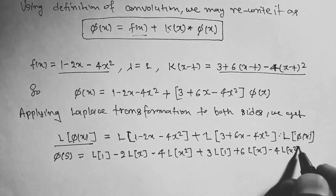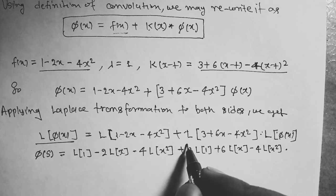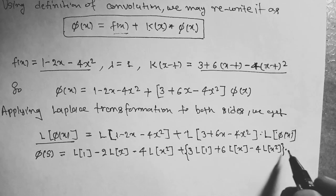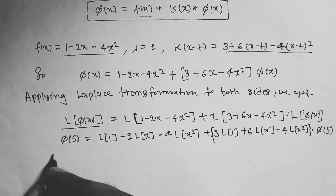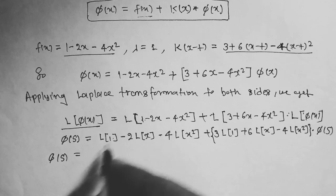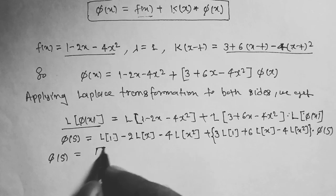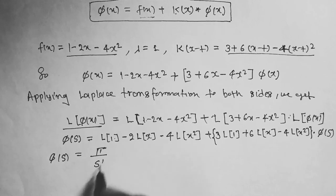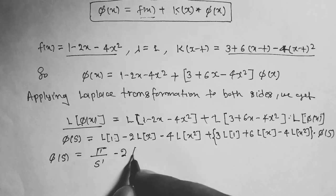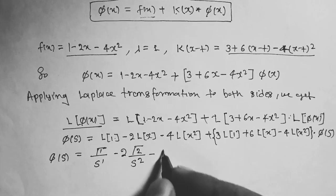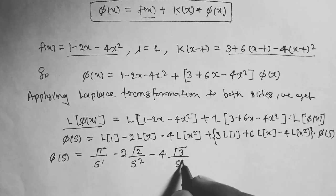φ(s) = 1/s - 2/s² - 4·2!/s³ + [3/s + 6·1!/s² - 4·2!/s³]·φ(s).